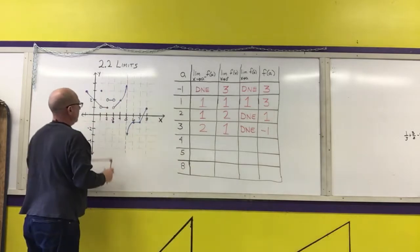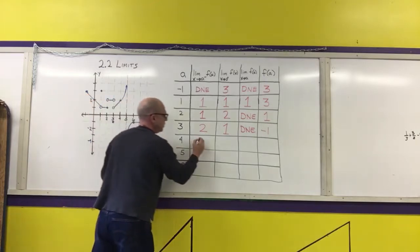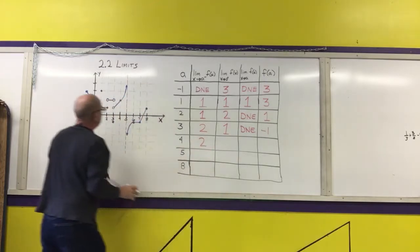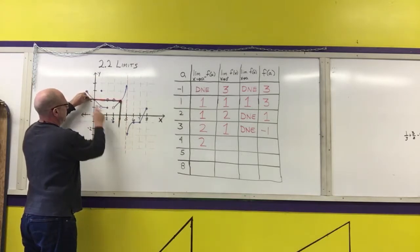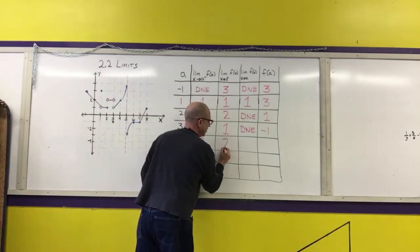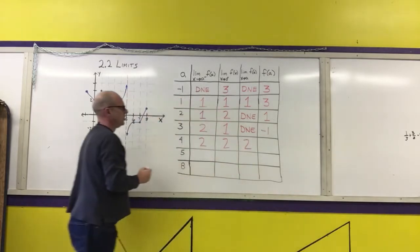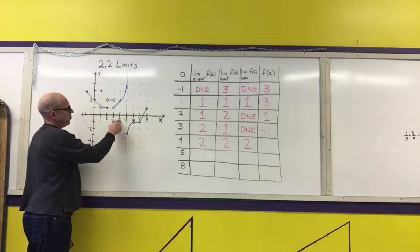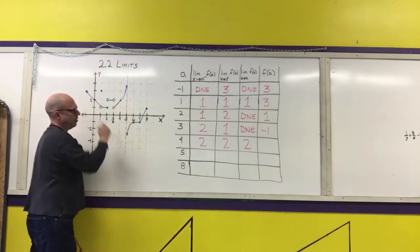For x = 4: approaching from the left, the y-value approaches 2. Approaching from the right along the graph, the y-value is also approaching 2. Because both one-sided limits exist and are the same value, the two-sided limit exists and its value is 2. When we put 4 into the function, the value of the function is also 2.